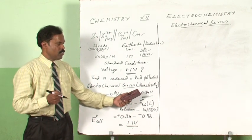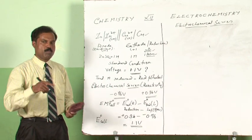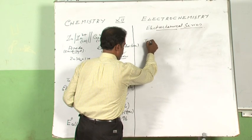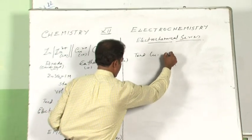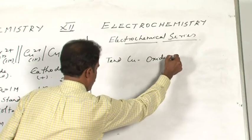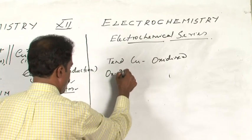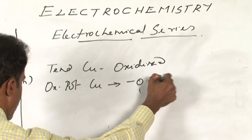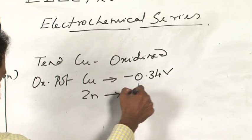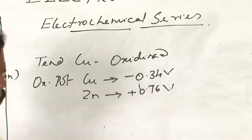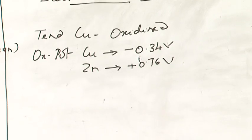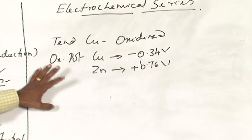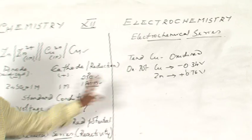If you consider the oxidation potential value of copper, it would mean the tendency of copper to get oxidized. The oxidation potential value of copper would be minus 0.34 volts, and that of zinc would be plus 0.76 volts. Normally we use reduction potential values for all calculations, so oxidation potential values are not typically used to find out the EMF of the cell.